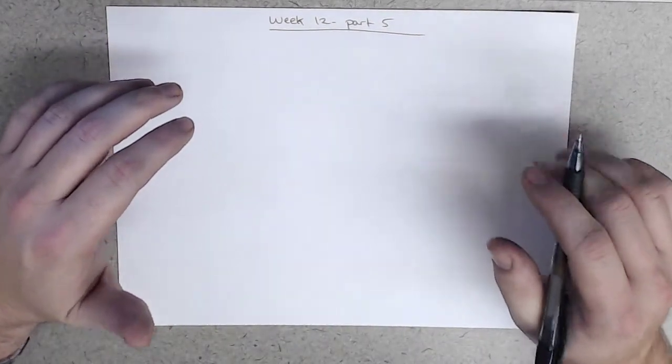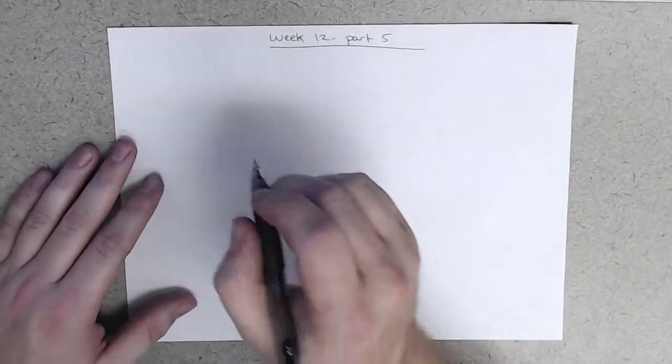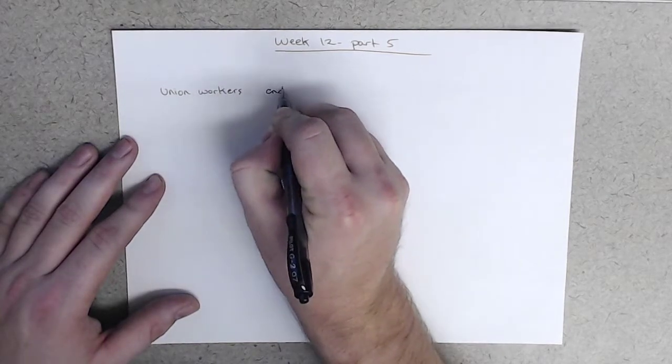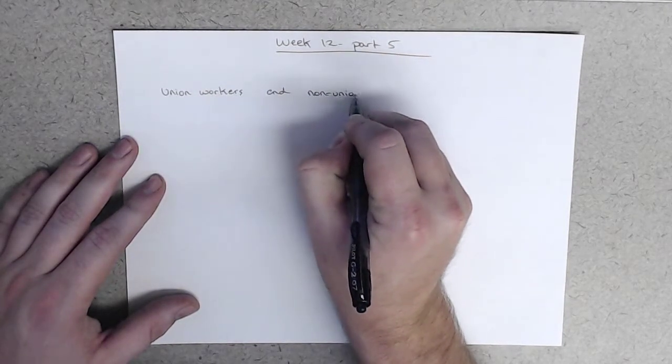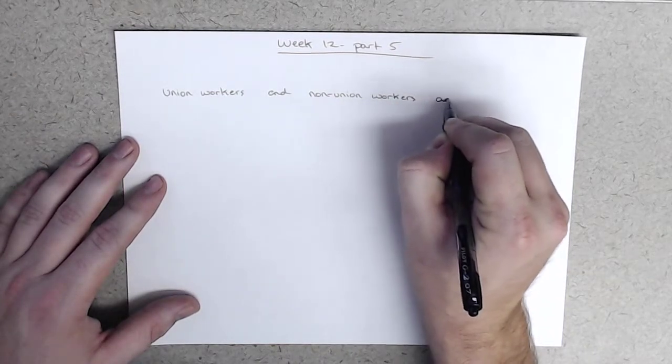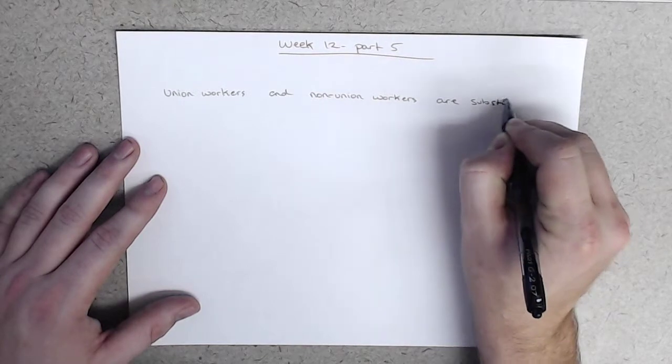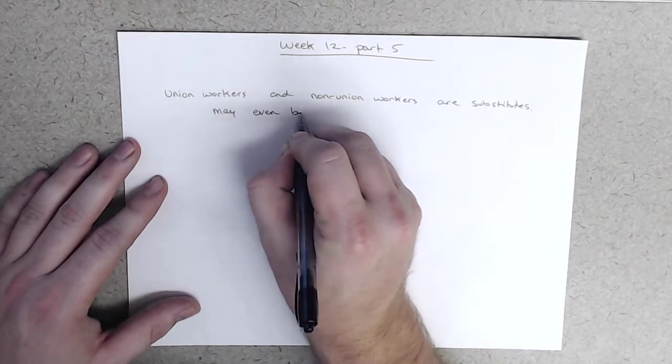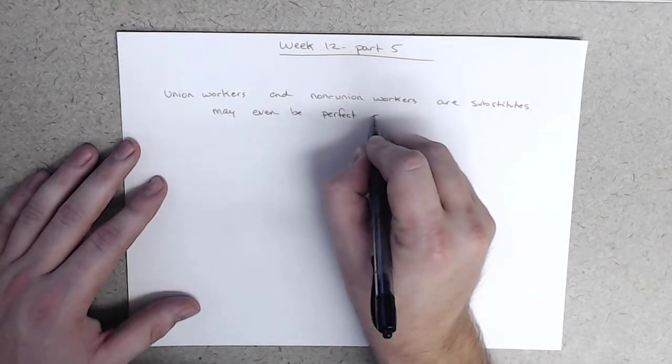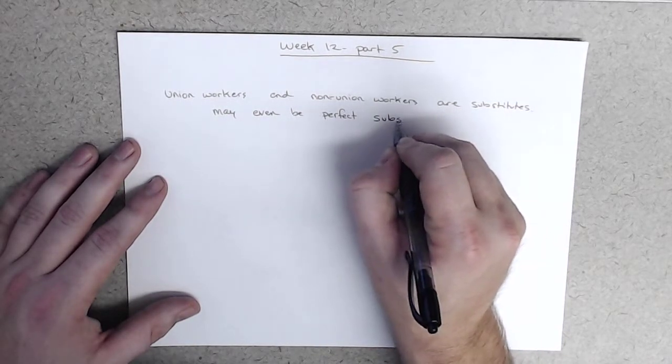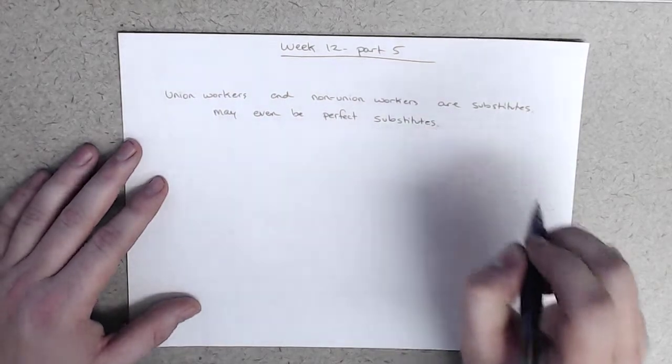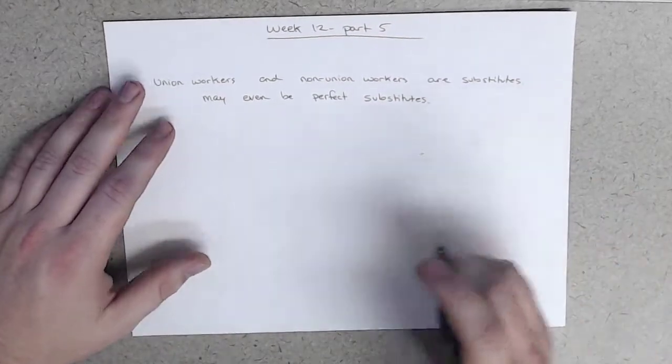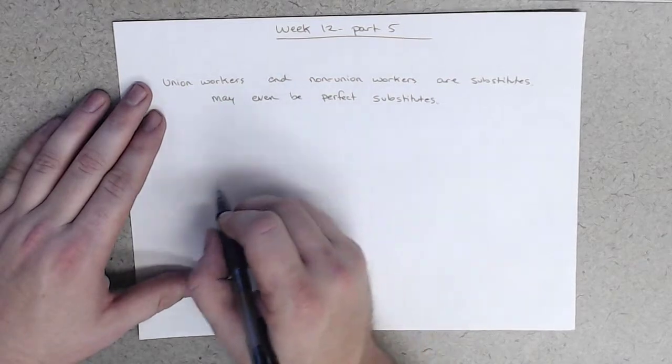Now, it's important to recognize one very crucial fact, and that is that union workers and non-union workers are substitutes. And they may even be perfect substitutes. In fact, there might be literally no difference between a union worker and a non-union worker. We can imagine, we can certainly imagine that being true.